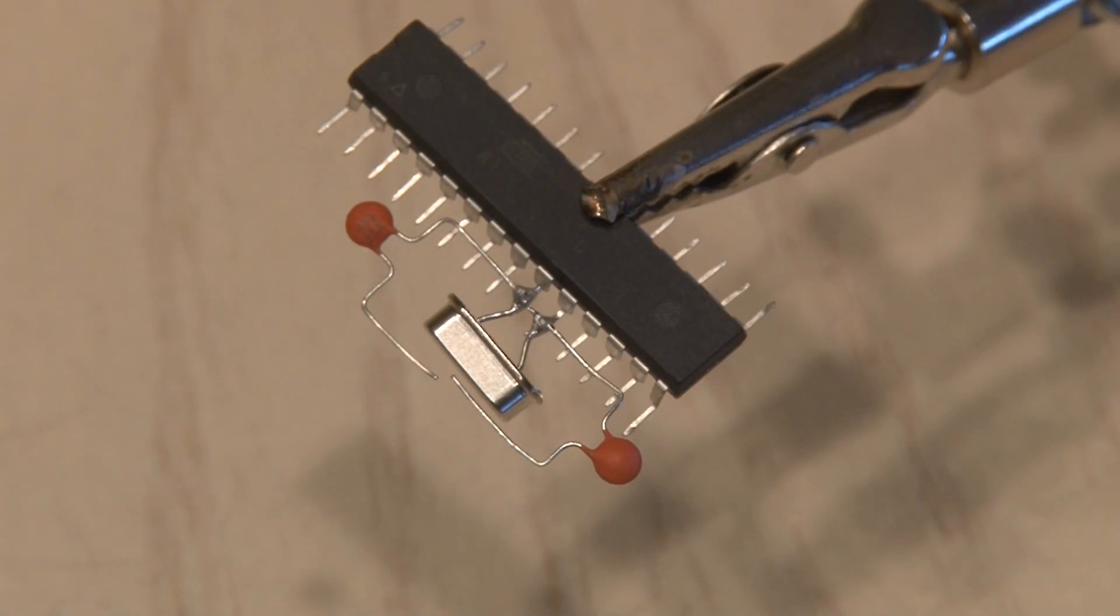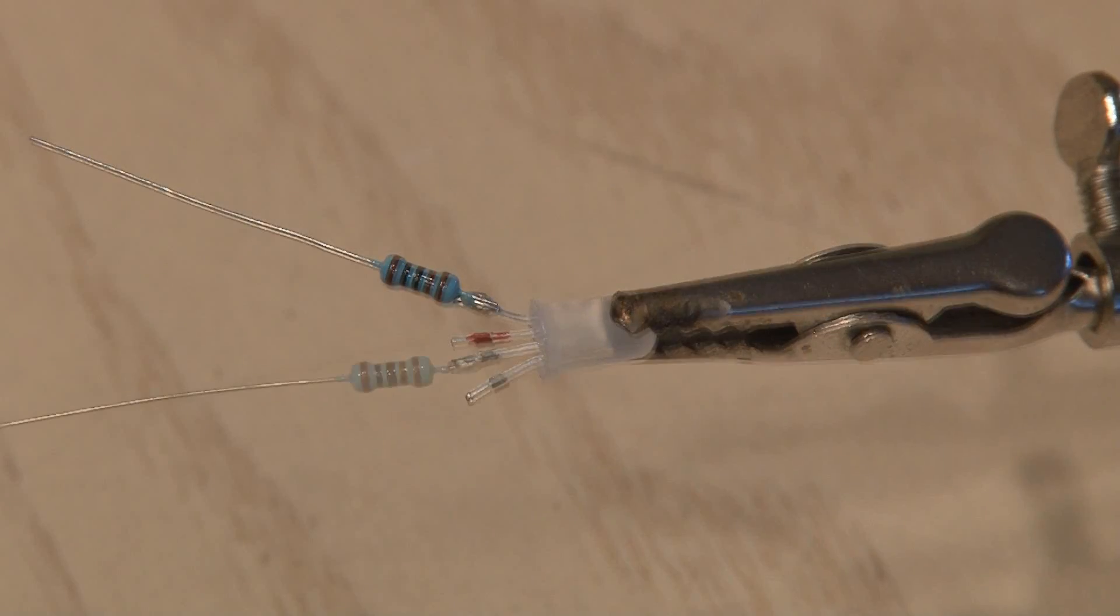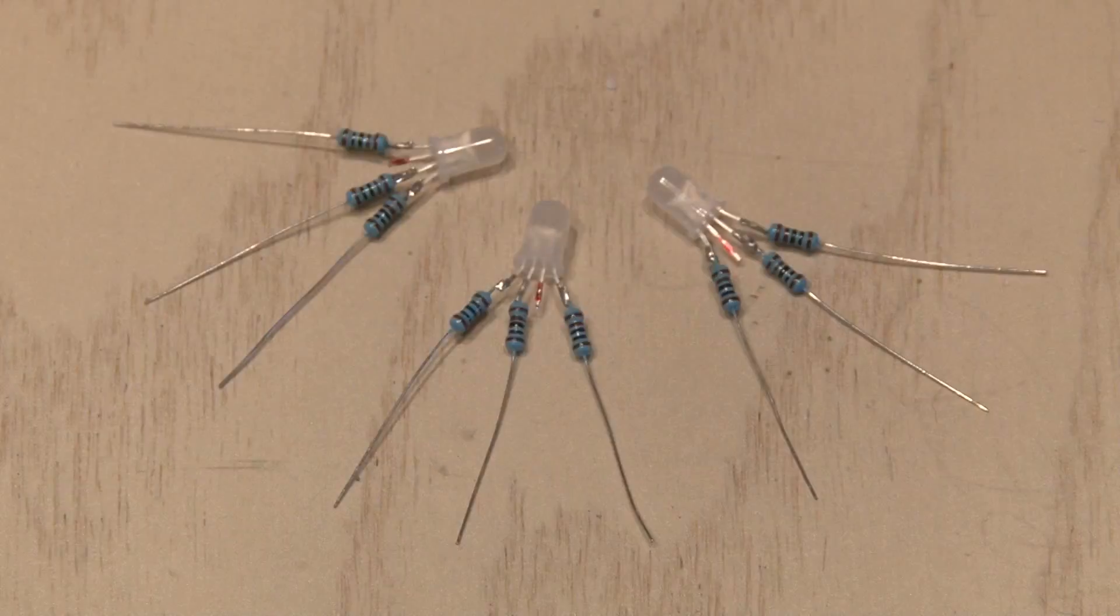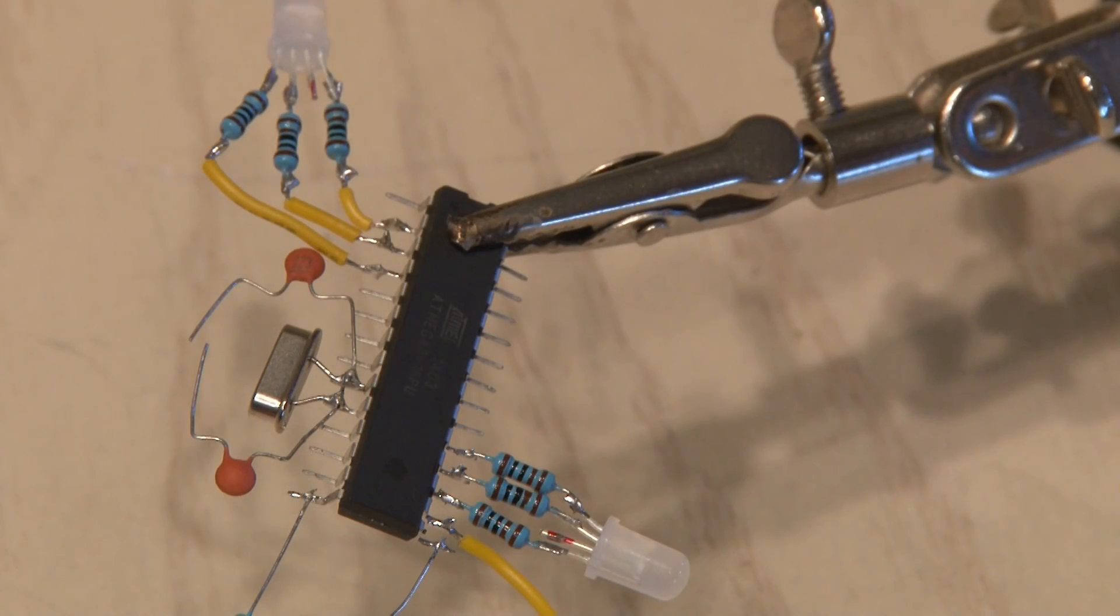We'll also add a couple of capacitors, and we're going to be using three color-changing LEDs. Three resistors will be soldered to three of the legs, and we'll do that for all three LEDs. Then those LEDs will be soldered to our AT Mega chip.